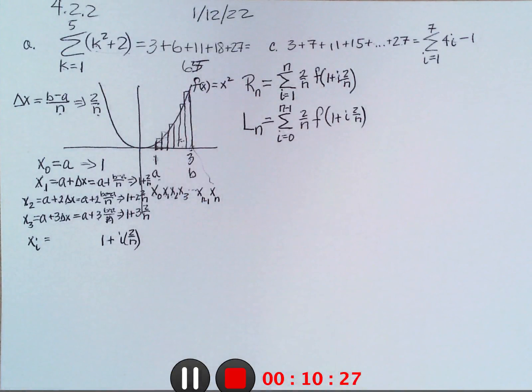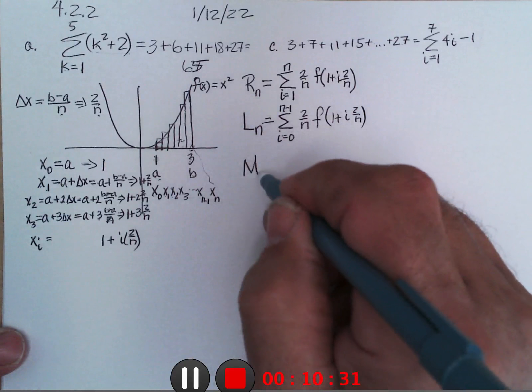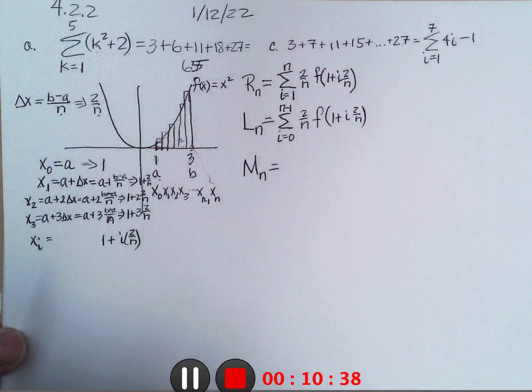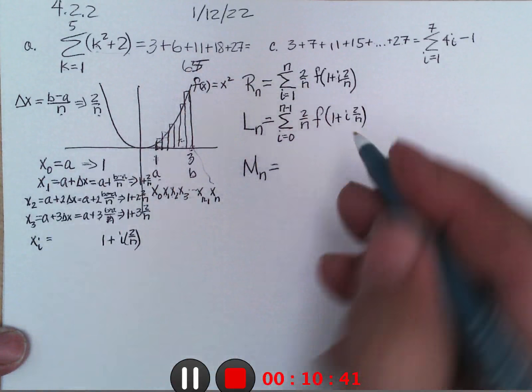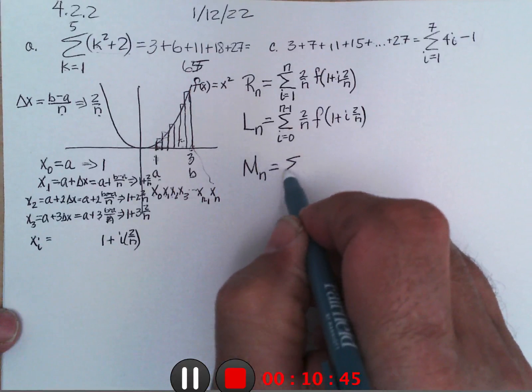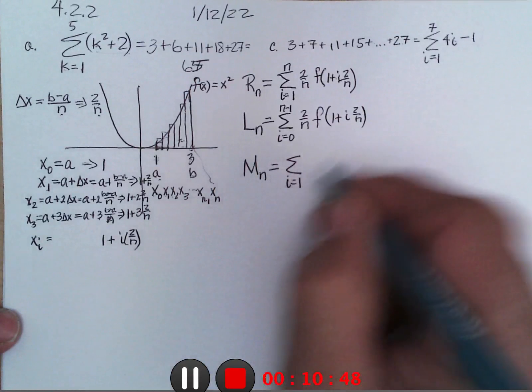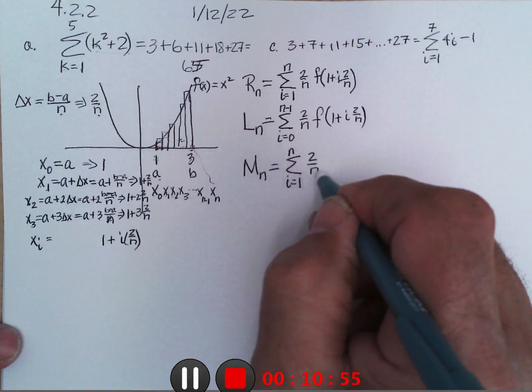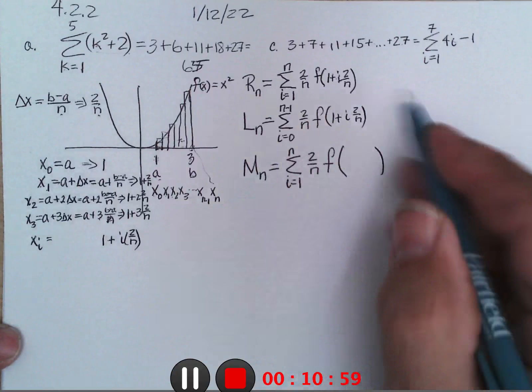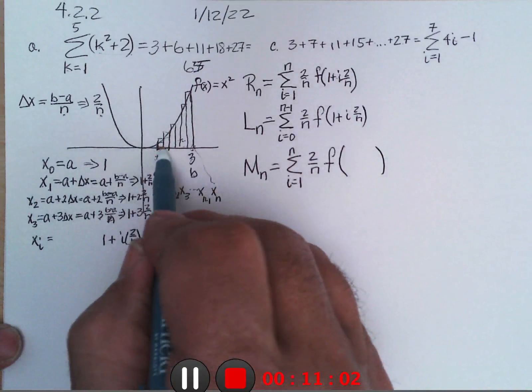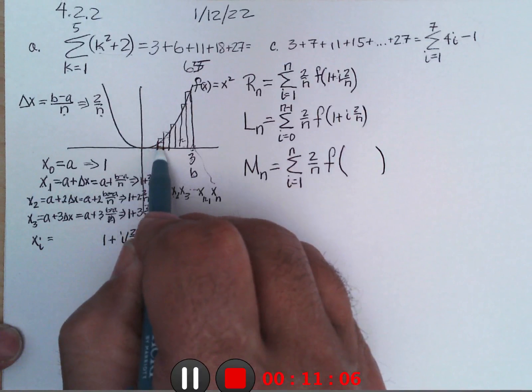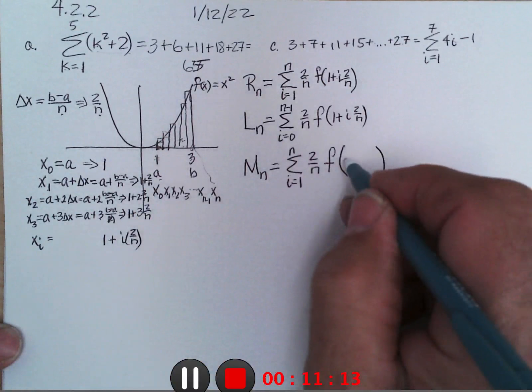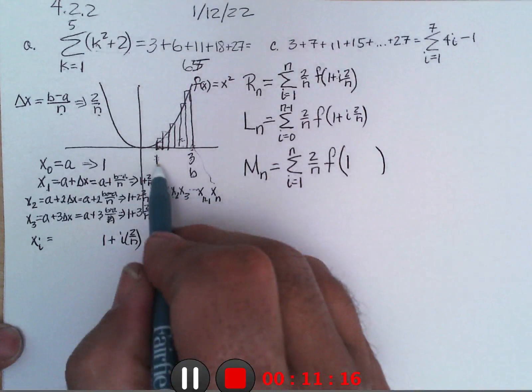Now if I were to try to do the midpoint one, it's a little trickier because it's got to go halfway between. So my solution for that is to do i equaling 1 to n. So the width of each bar is still going to be the same, 2 over n. But the height will be found not at x1, not at x0, but halfway between.